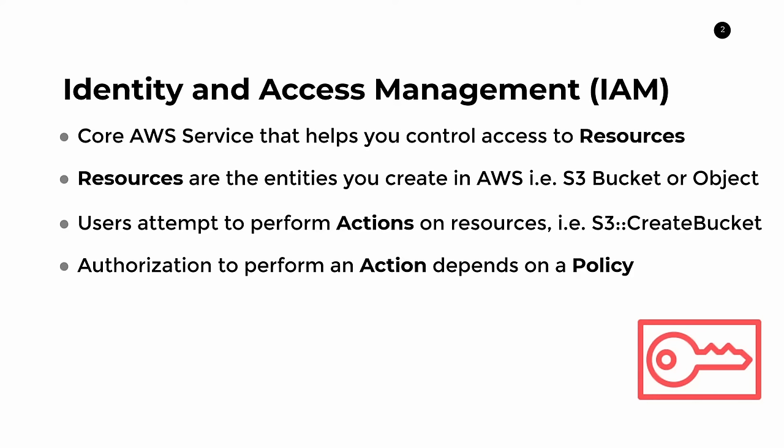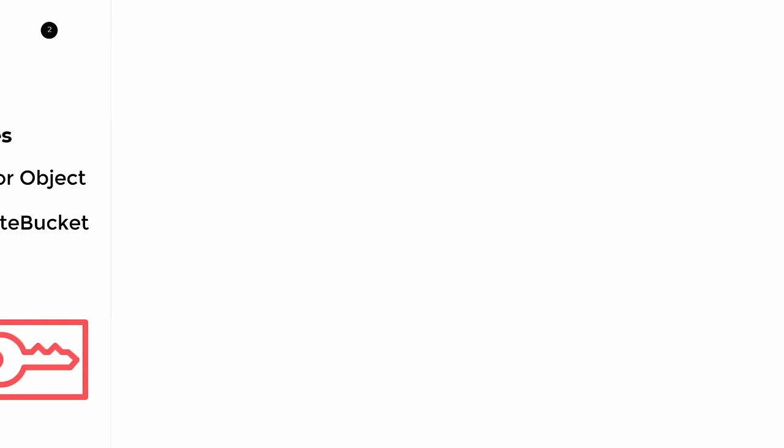If you followed along and understood those four concepts, that is basically the core of AWS IAM. If you got it, fantastic — the next slides are going to be even easier. If you didn't, don't worry, because we have a whole bunch of examples that we're going to go through. So let's take a look at a quick example to demonstrate some of these concepts in action.